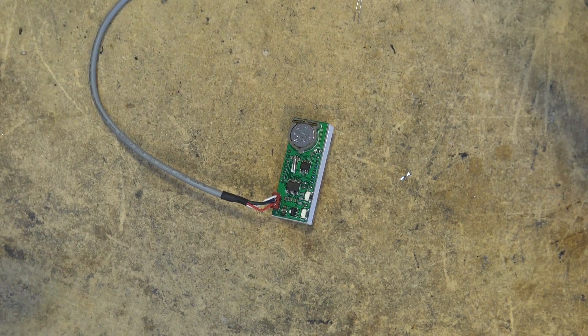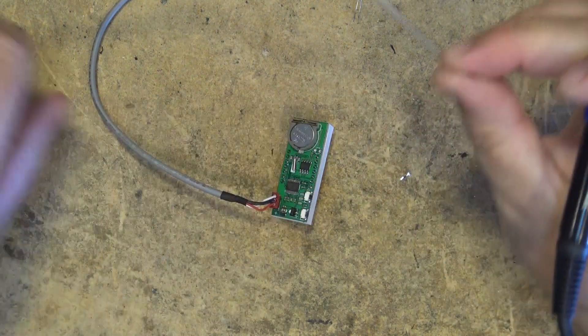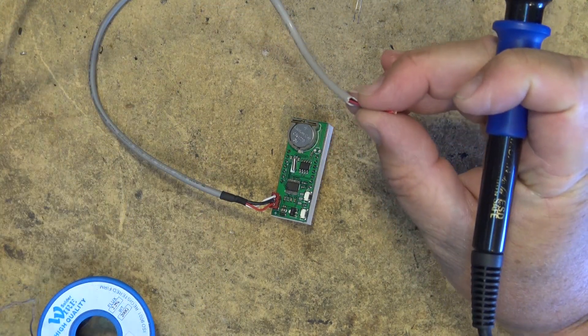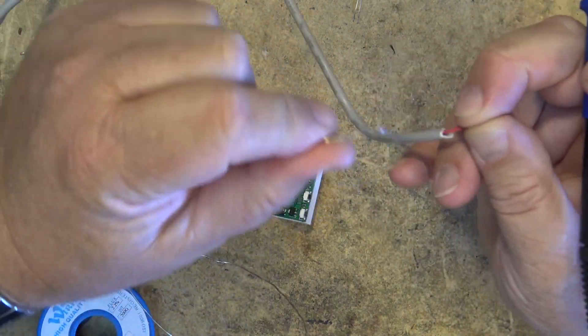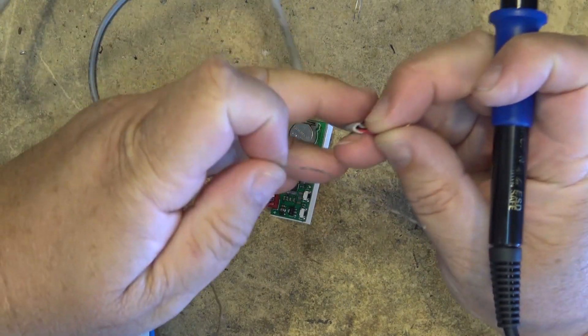Then the other end of the wire I'm going to solder onto the temperature probe and then I'm just going to put some heat shrink tubing on there and we'll test it out.